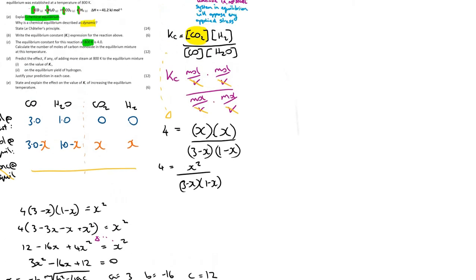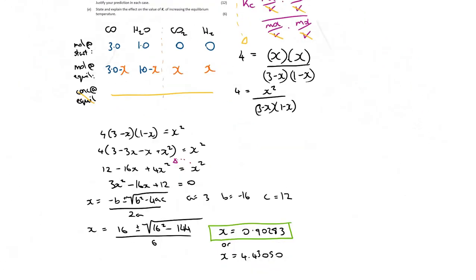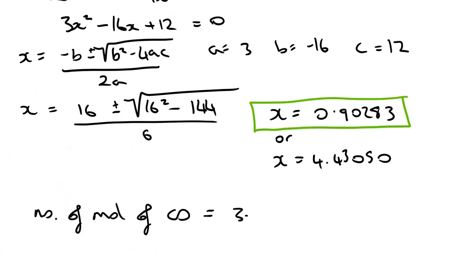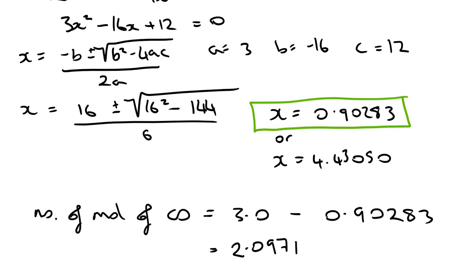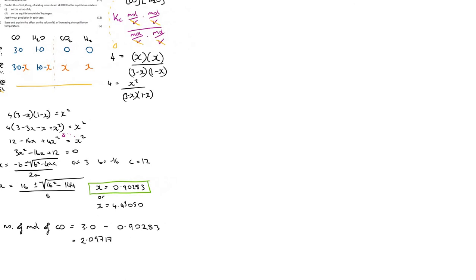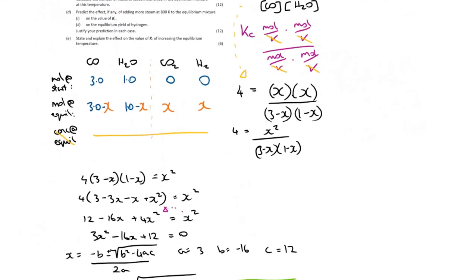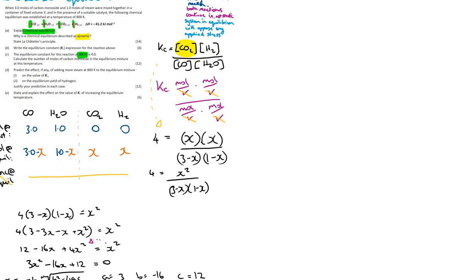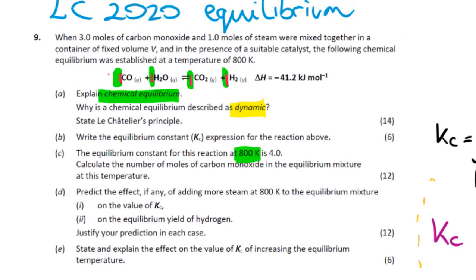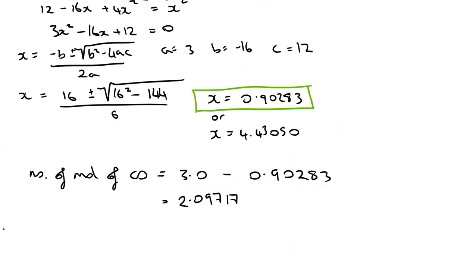We know x, so we can work out the moles of carbon monoxide in the equilibrium mixture: 3.0 - 0.90283 = 2.09717. Since the data was given to 2 significant figures (3.0 moles CO and 1.0 moles steam), we round to 2 significant figures, giving 2.1 mol CO.